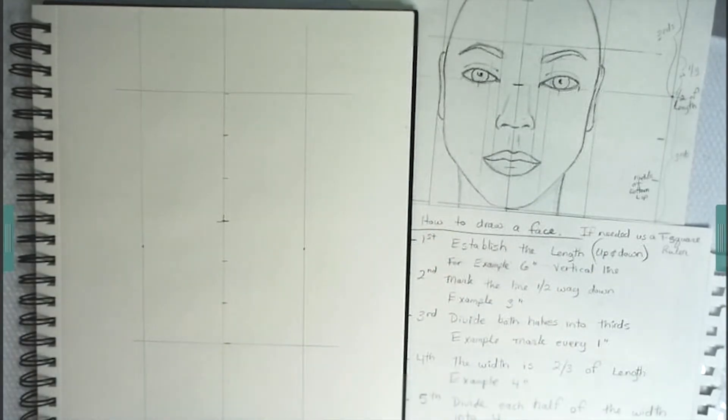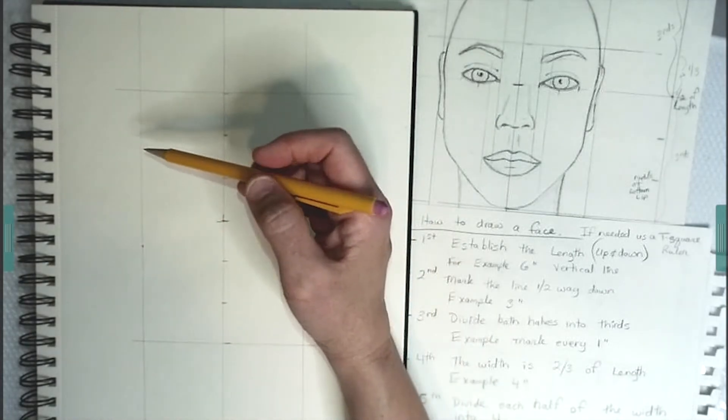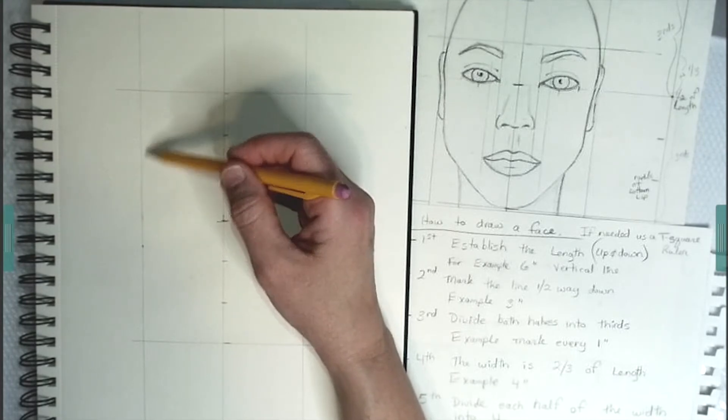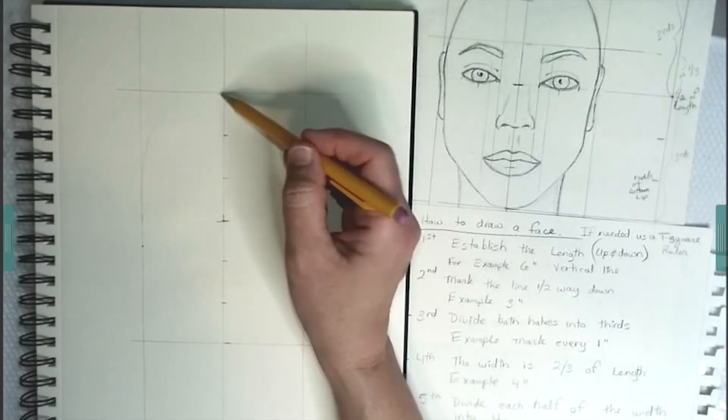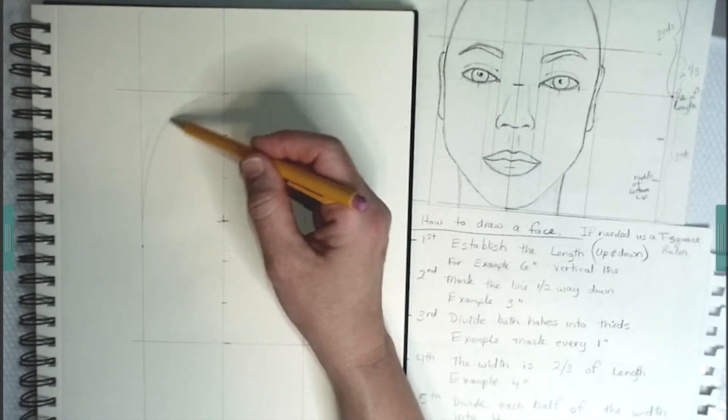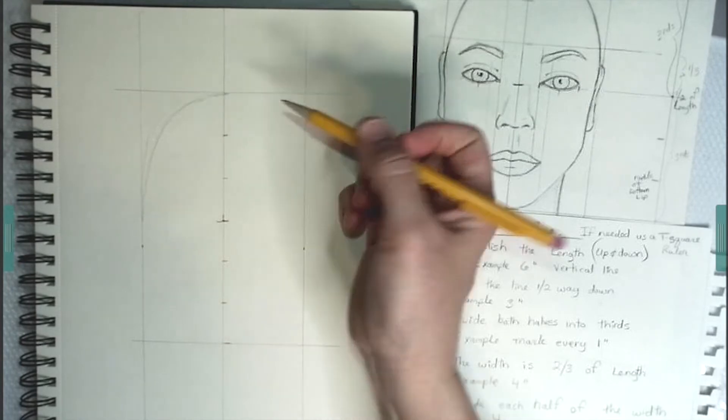Once you have your rectangular box made, then you could start drawing in the head, which is an oval. Nice and smooth corners. Try to get each side the same.